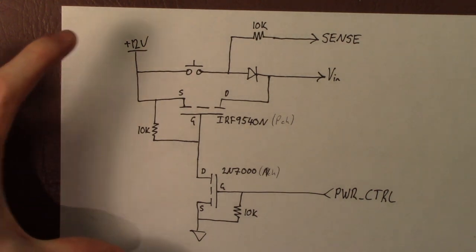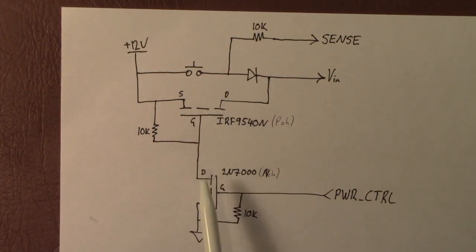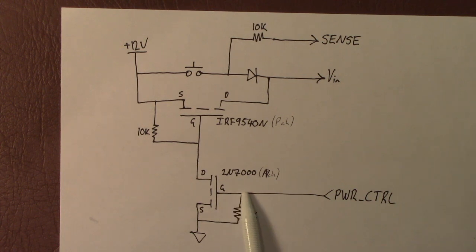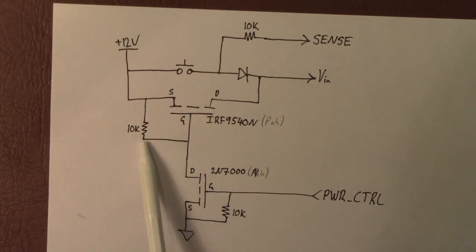When you first apply power you apply your 12V to the circuit. Both of the transistors are hard off. The gate of the N-channel is being pulled to ground so it's hard off. Which means this line is floating being pulled up to supply by the 10K.